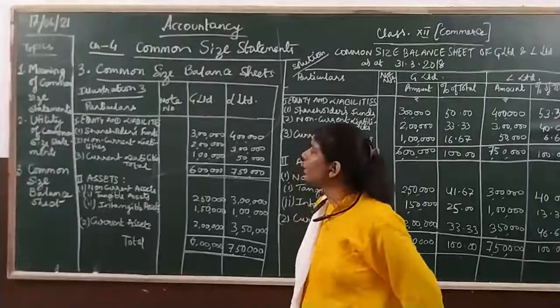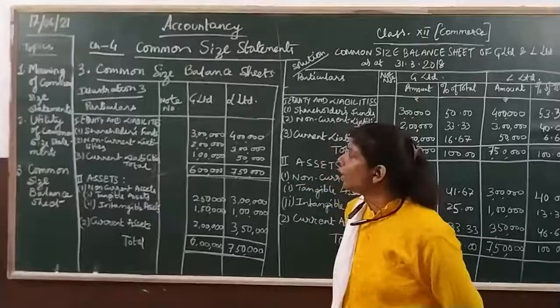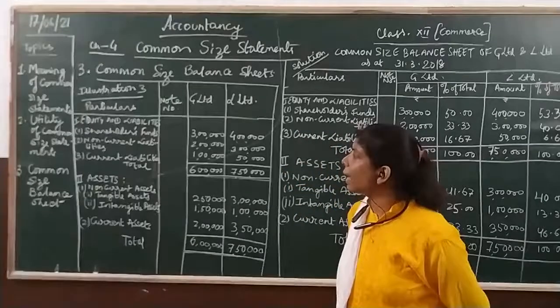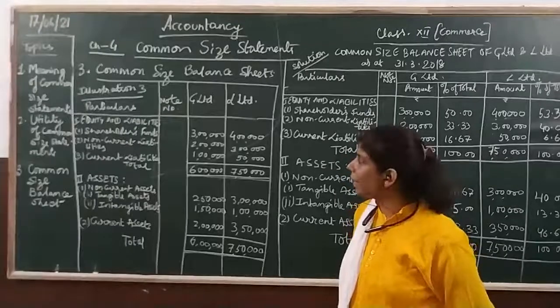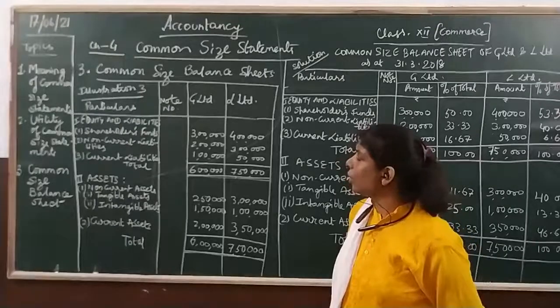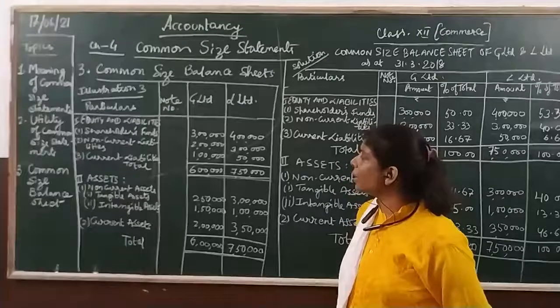One company is G Limited and the other is L Limited. G Limited figures are in the first column and L Limited figures are in the second column. The first heading given is Equity and Liabilities.